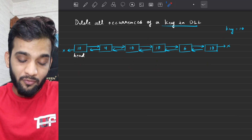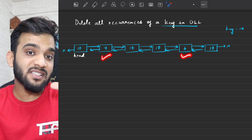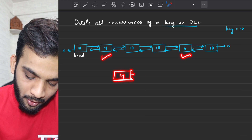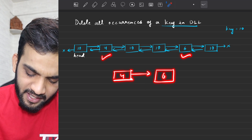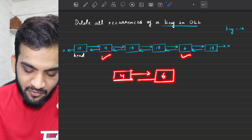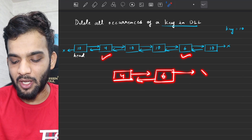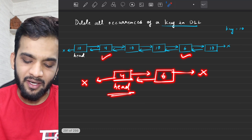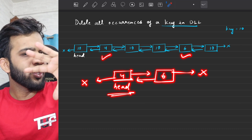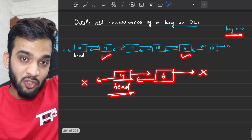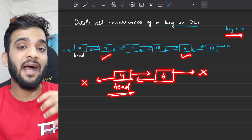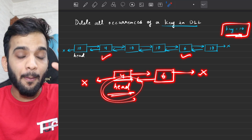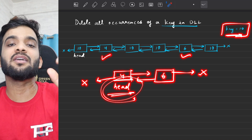Once you have deleted all of these, you will just have 4 and 6 left. The updated doubly linked list will have 4 pointing its next to 6, 6's previous pointing to 4, 6's next pointing to NULL, and 4's previous pointing to NULL. This will be the updated head of the doubly linked list. Wherever you find the key, you will have to delete that particular node, and return the updated head.